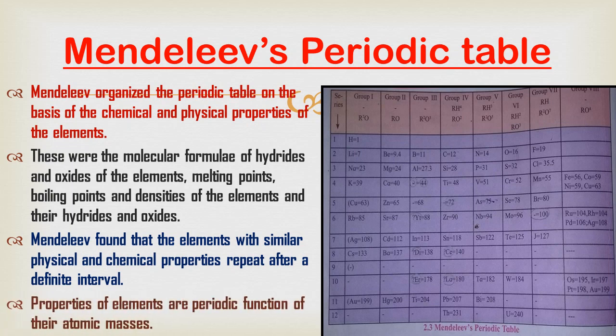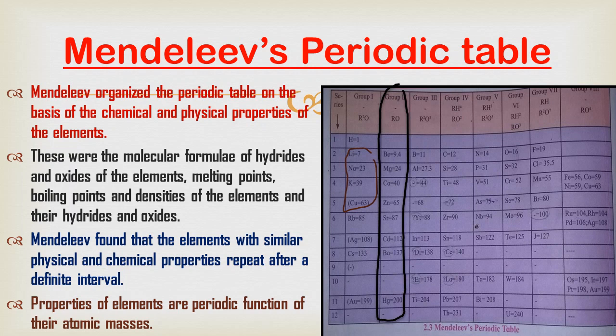On the basis of these findings, Mandeliev stated the following periodic law: the properties of elements are a periodic function of their atomic masses. This means physical and chemical properties of an element are repeated after a definite interval when elements are arranged in increasing order of their atomic masses. In Mandeliev's periodic table, vertical columns are called groups and horizontal rows are called periods. There are 8 groups and 12 periods in Mandeliev's periodic table.